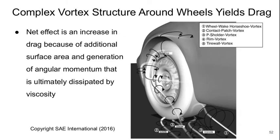In terms of how the wheels produce drag, you get a complex vortical structure because of the rotating surface. The net effect is typically an increase in drag because there's extra surface area and we get some angular momentum generated that is not used — it's ultimately dissipated by viscosity.